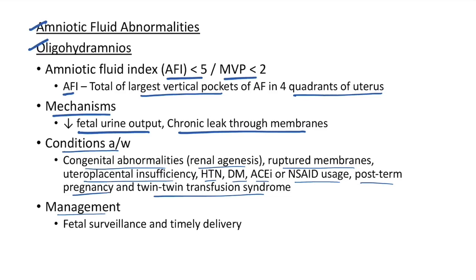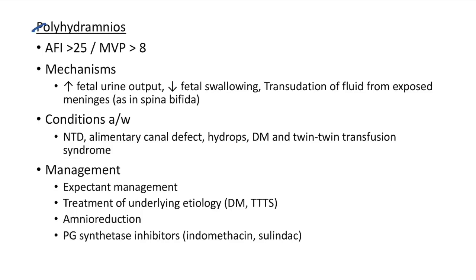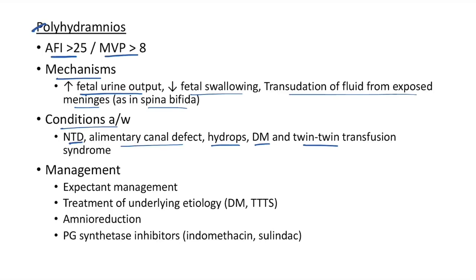Management of oligohydramnios: fetal surveillance and timely delivery. Polyhydramnios is defined as AFI >25 or MVP >8. Mechanisms: increased fetal urine output, or decreased fetal swallowing and translocation of fluid from exposed meninges as in spina bifida. Associated conditions: neural tube defects, alimentary canal defect, hydrops, diabetes mellitus, and twin-to-twin transfusion syndrome. Management: expectant management, treat underlying etiology, amniocentesis reduction, and PG synthetase inhibitors such as indomethacin and sulindac.